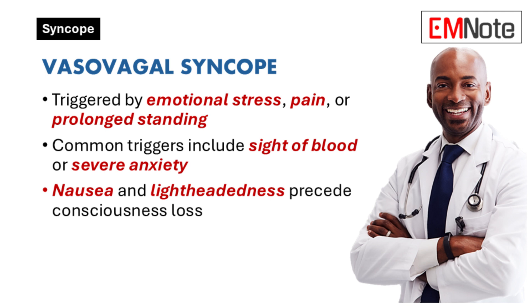Vasovagal syncope is often triggered by emotional stress, pain, or prolonged standing. Patients may describe prodromal symptoms like nausea or lightheadedness. Classic examples include fainting at the sight of blood or during moments of severe anxiety.